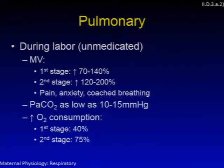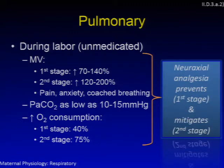In a woman who's in pain or coaching her breathing, PaCO2 can drop as low as 10 to 15 mmHg during labor, and O2 consumption is further increased from the baseline pregnant state. In the first stage it goes up by 40%, and by the second stage by 75%. Neuraxial analgesia can prevent these changes almost completely during the first stage and mitigate them during the second stage of labor.